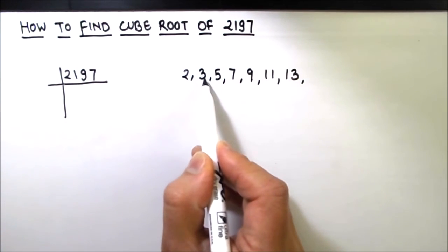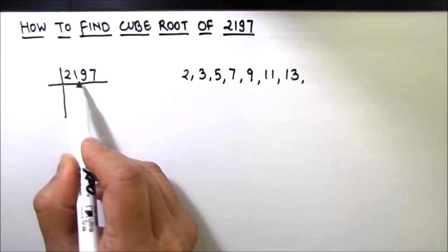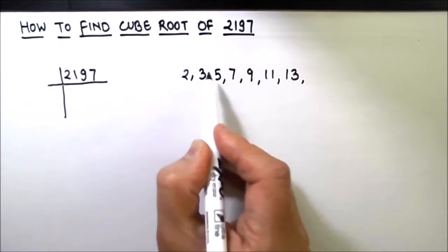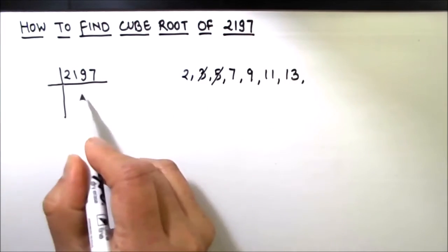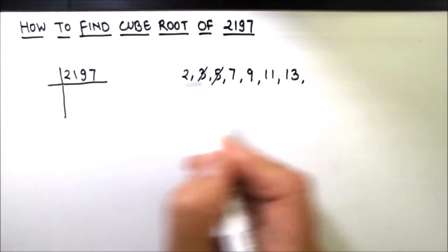As this is an odd number, let's try dividing it by 3. 3 times 7, 3 times 3. No, this is not going by 3. 5 is not the factor of this number. Let's try dividing it by 7.